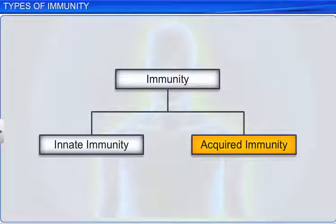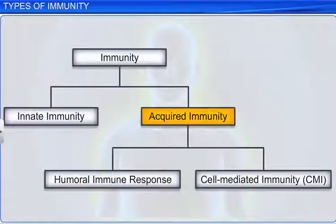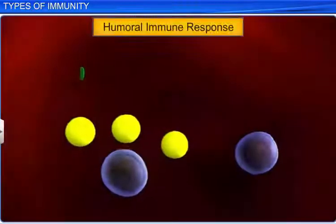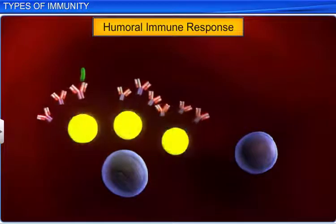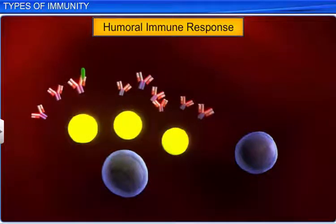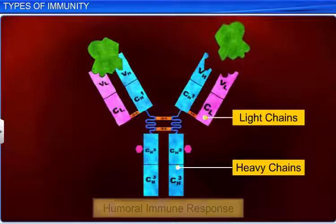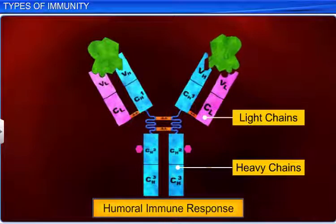Acquired immunity, or the acquired immune response, is primarily of two types: a humoral immune response and a cell-mediated immunity (CMI). It is the humoral immune response that is carried out by antibodies. Since antibodies are found in blood, it is called the humoral immune response. The word humoral refers to blood or any other body fluid.